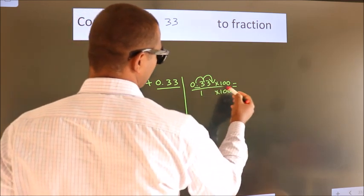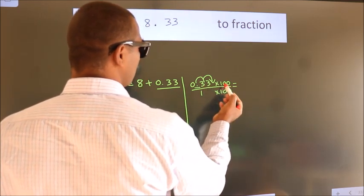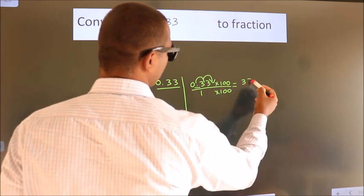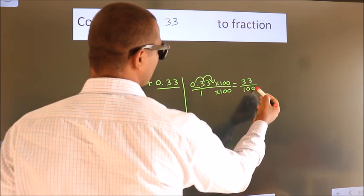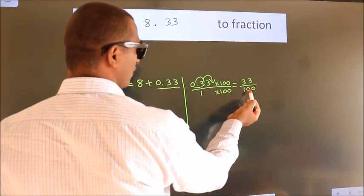Next, 0.33 into 100 is 33. 1 into 100 is 100. This is the fraction we got.